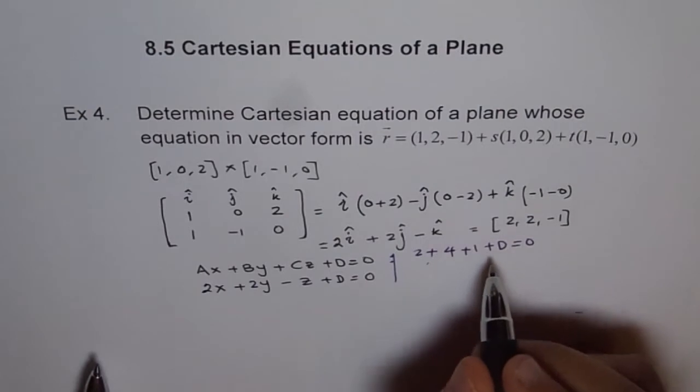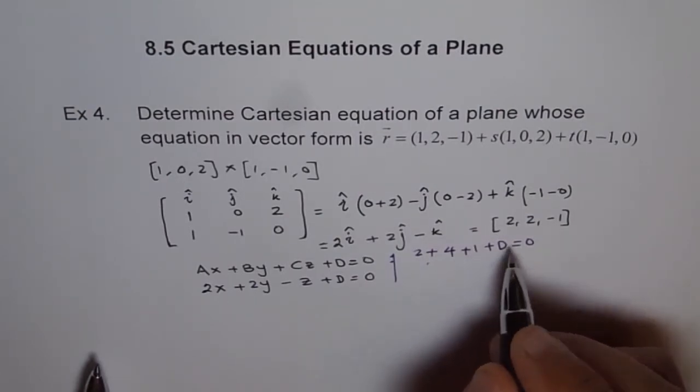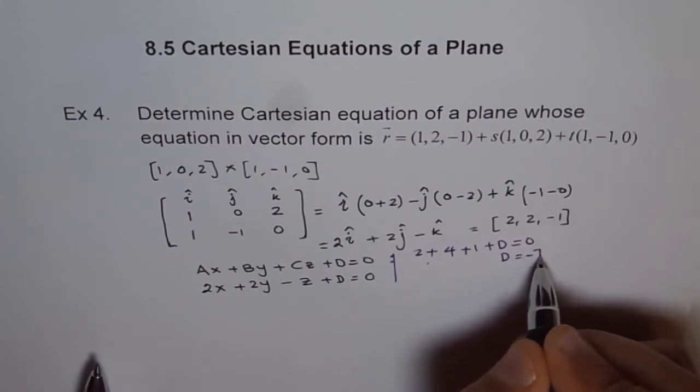So, from here, we get 2 plus 4, 6 plus 1 is 7. So, D is equal to minus 7.